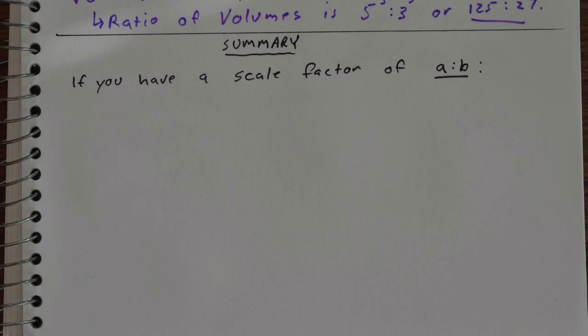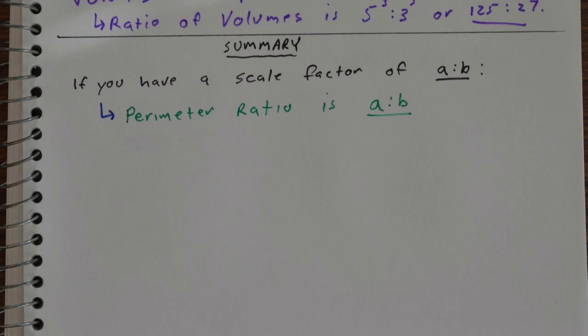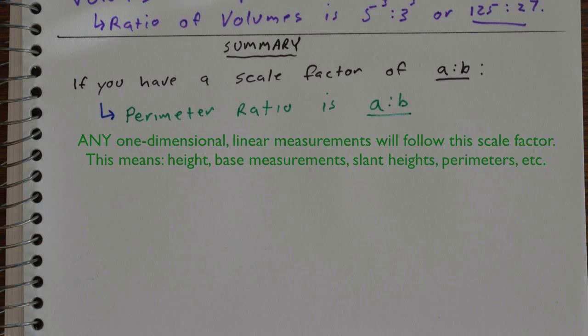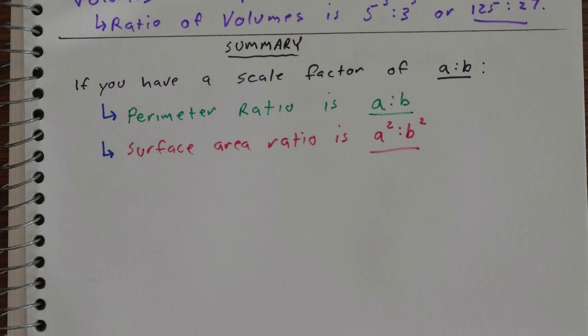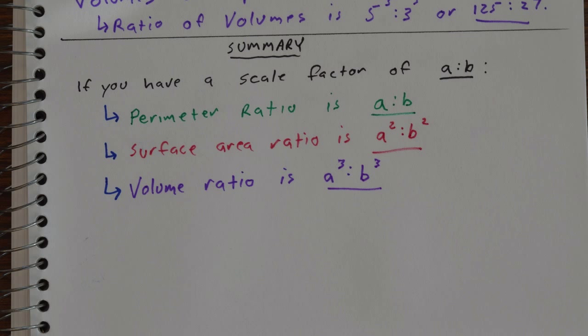And so to recap, if we have two similar solids with a scale factor A to B, the perimeter ratio is also A to B. In other words, any one dimensional measurements, so perimeter, heights, base measurements, slant heights, those will always follow that scale factor of A to B. Surface area ratio will be A squared to B squared, and volume, A cubed to B cubed.